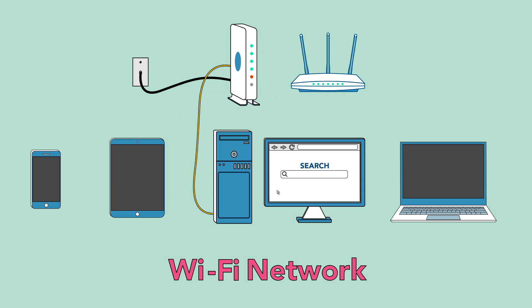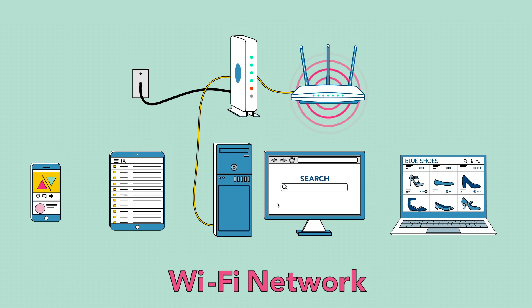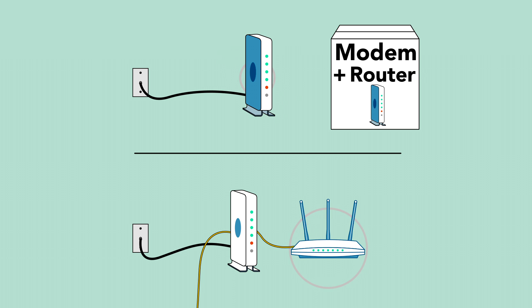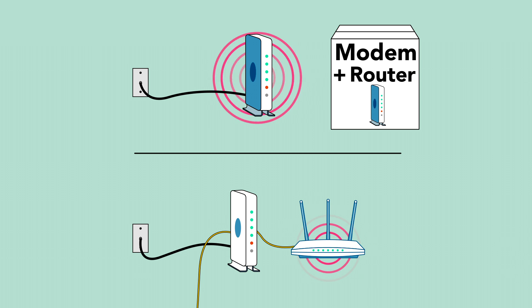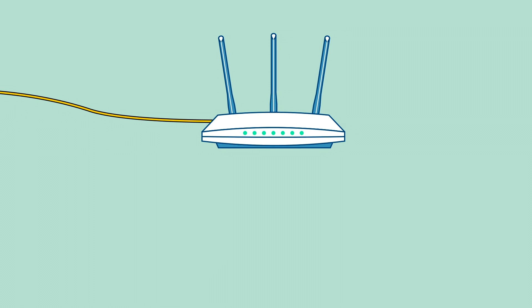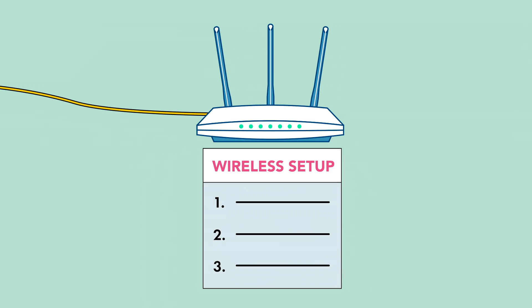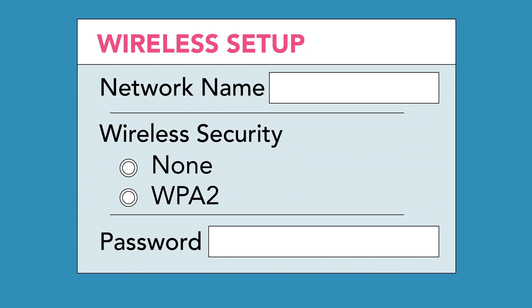To do this, you'll need a wireless router, which takes the internet connection from your modem and broadcasts it throughout your home. Your modem may already have a wireless router built in, so you may not need to buy one. To set up your wireless connection, follow the instructions included with your router. You'll need to choose a network name, also known as an SSID.